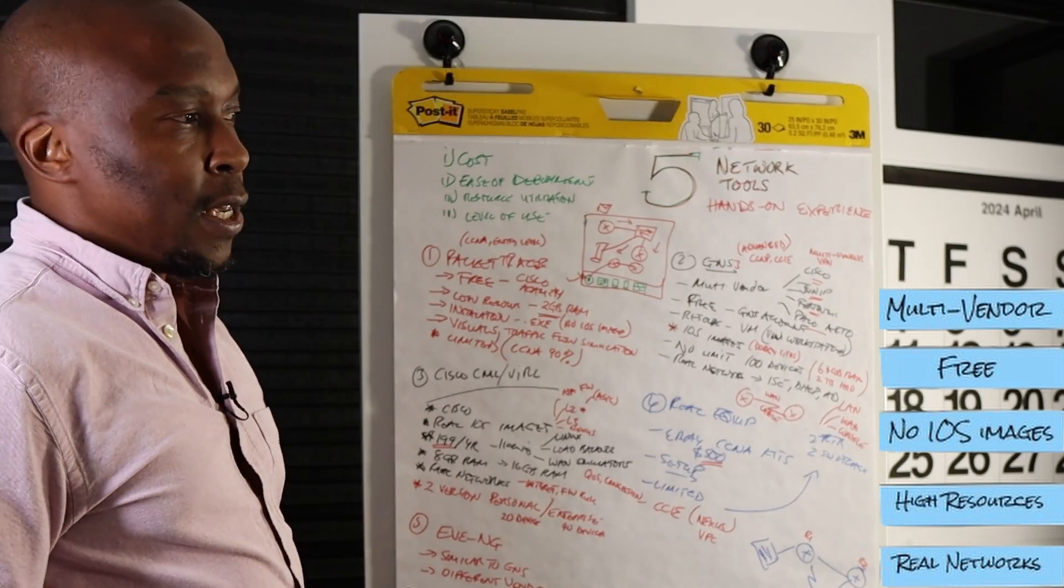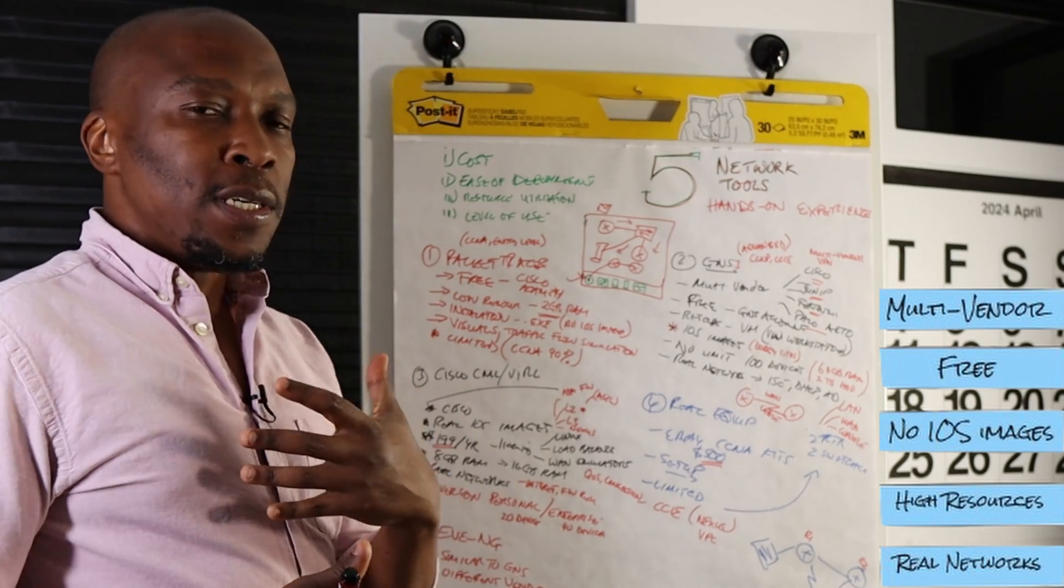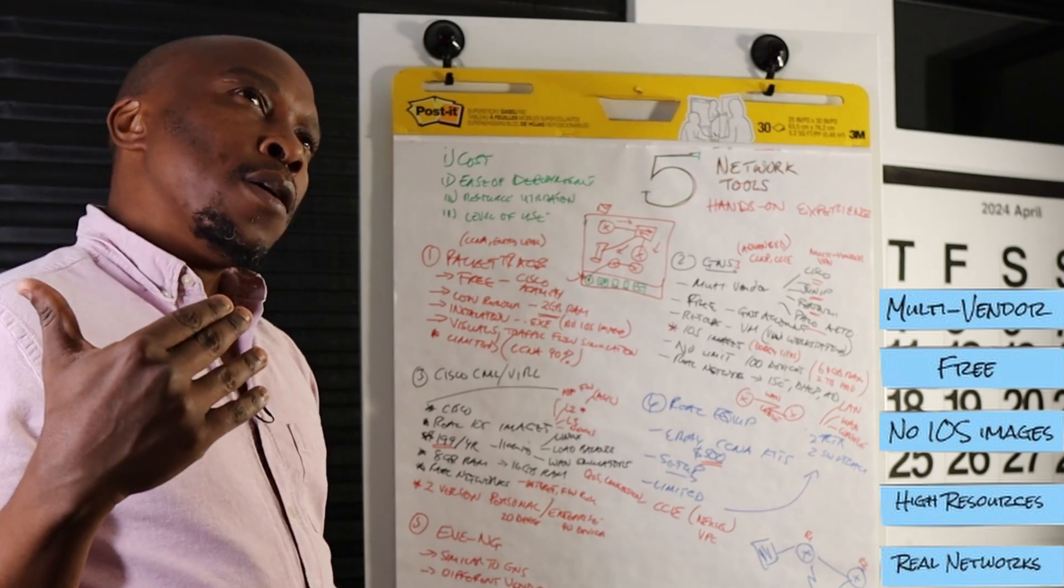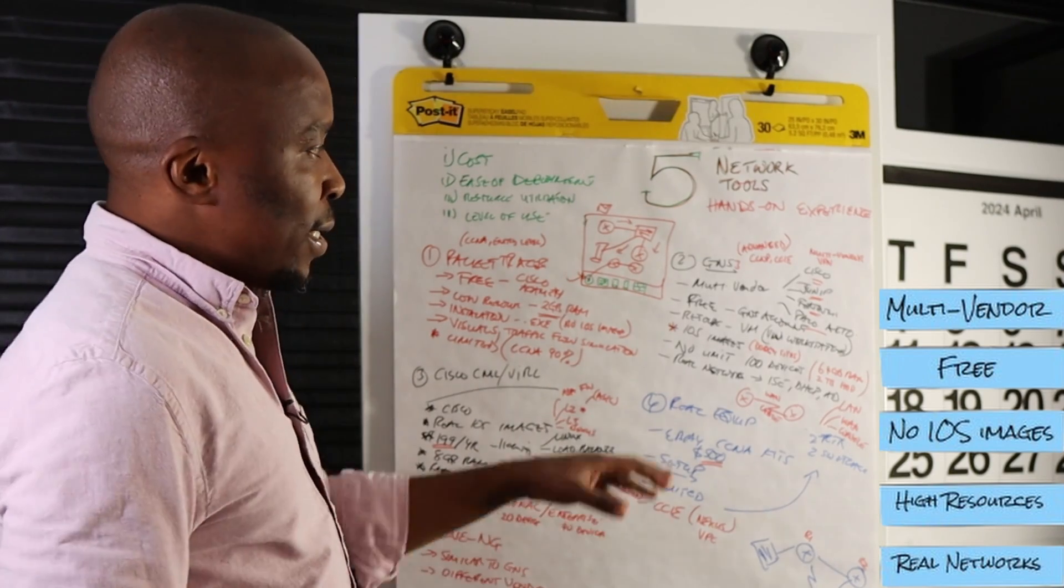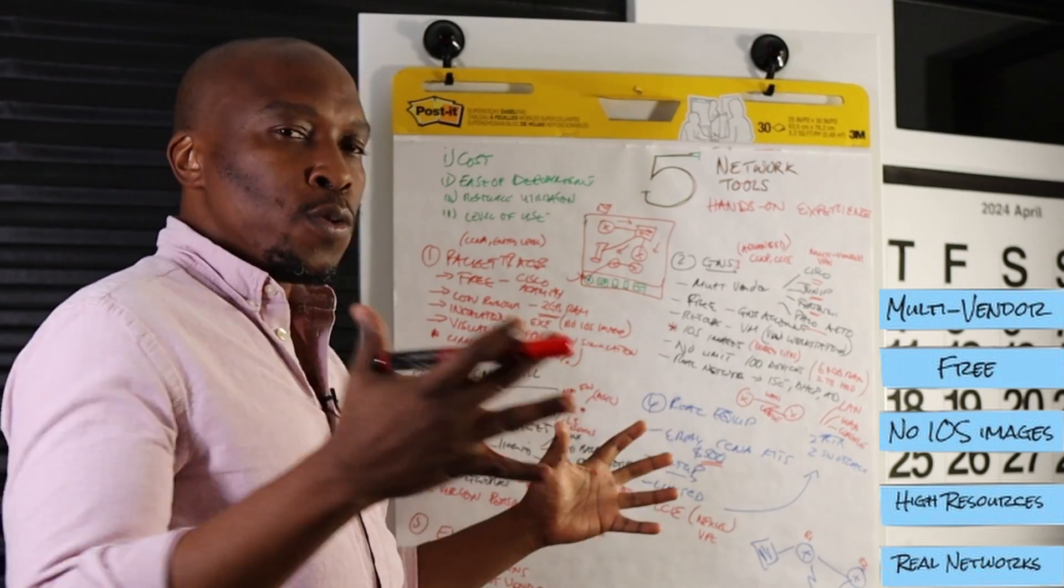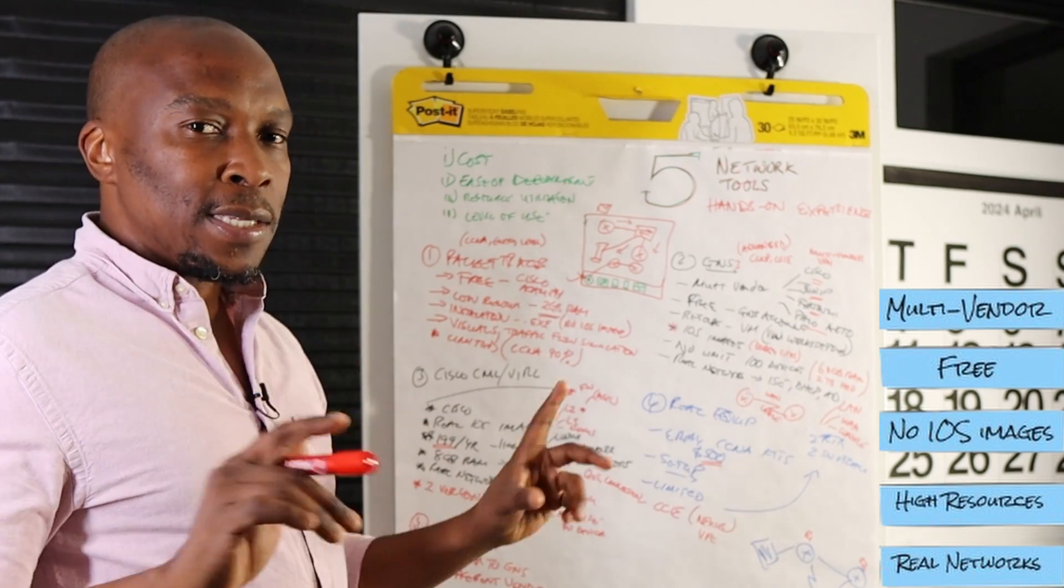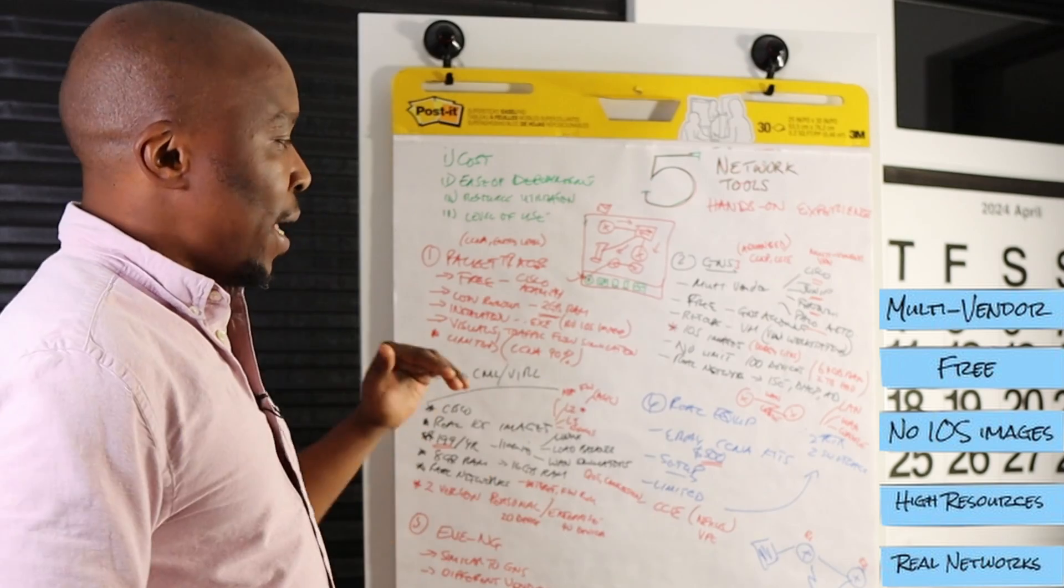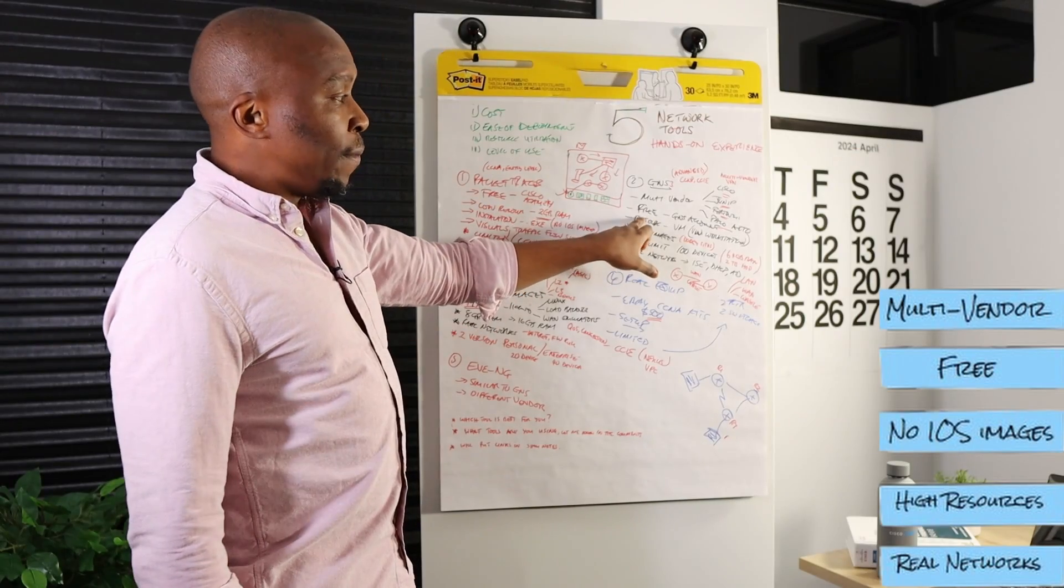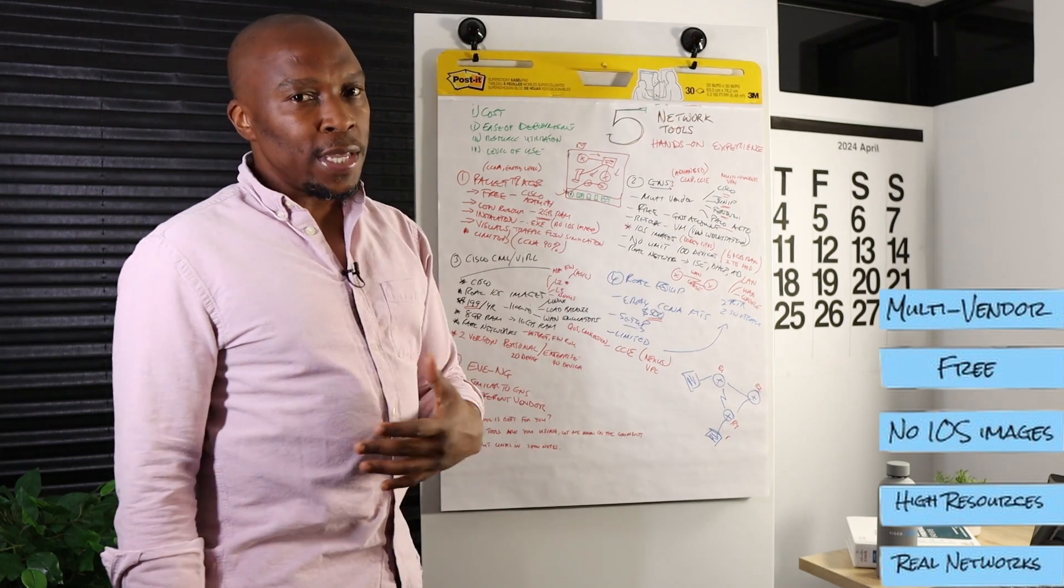And this is very important if you are going to need to build a lab that requires multi-vendors in order for you to test the configuration. And the typical configuration that comes to mind is a site-to-site VPN where you are running from Cisco to Palo Alto or Cisco to Fortinet. GNS3 is going to give you that ability because it runs multi-vendor infrastructure as compared to Packet Tracer. Just like Packet Tracer it's also free. All you need to do is create a GNS3 account and then you're going to get the installation file.